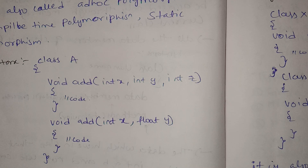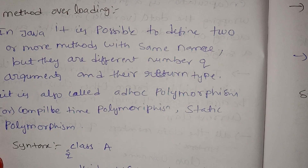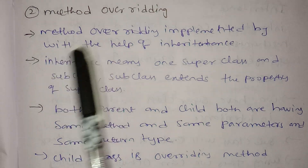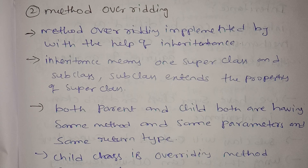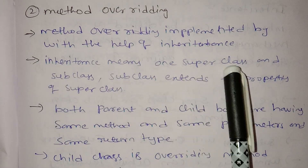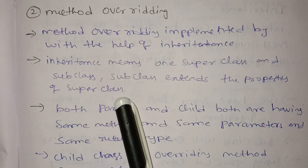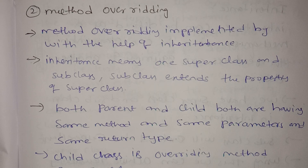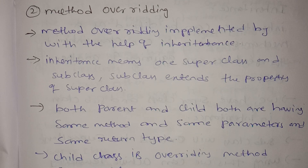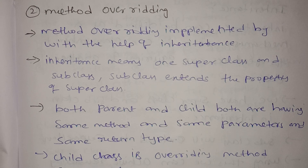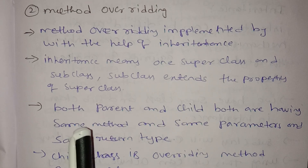Next is method overriding. Method overriding is implemented with the help of inheritance. It is an extension of the inheritance concept. Inheritance means one super class and sub class — the sub class extends the properties of the super class. The sub class is also called child class, base class, or derived class. I will explain method overloading and method overriding once the program starts.